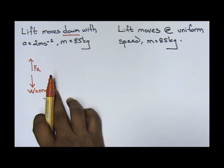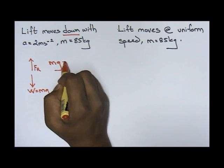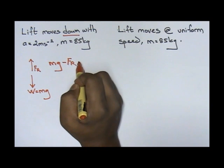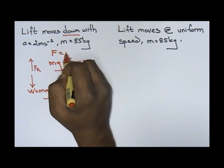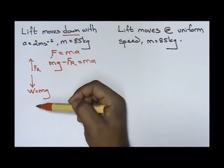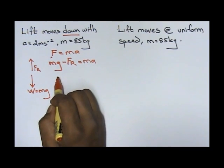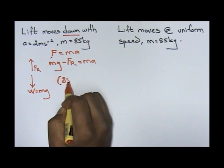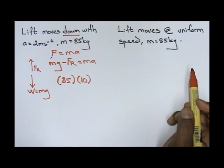Now if the lift moves down, which one is higher? Yes, mg. So it'll be mg minus FR equals to ma. Same thing from your force equals to ma formula. So mg minus FR equals to ma. Now your m is 85, your g is 10.